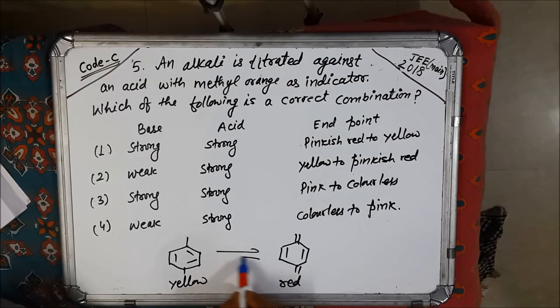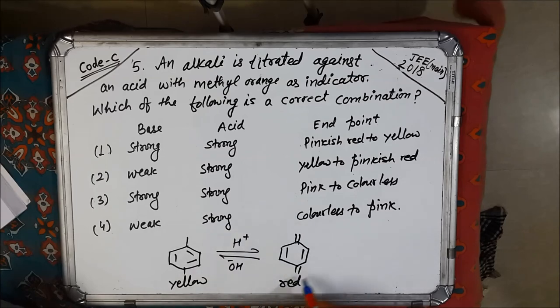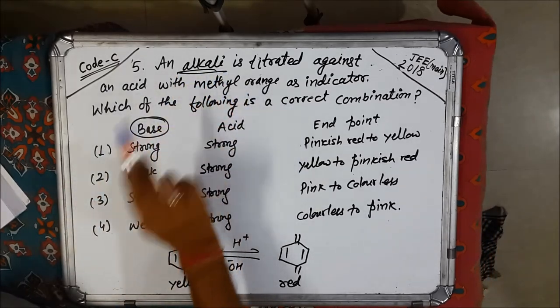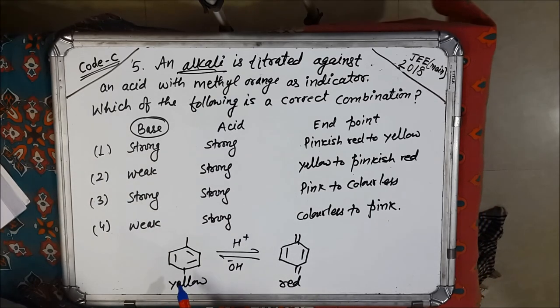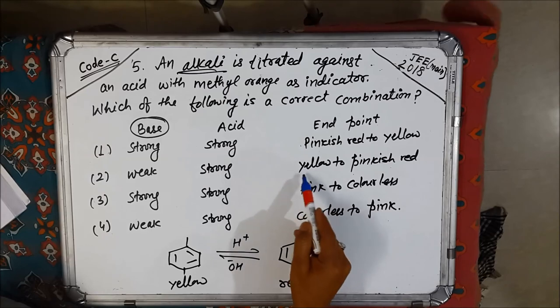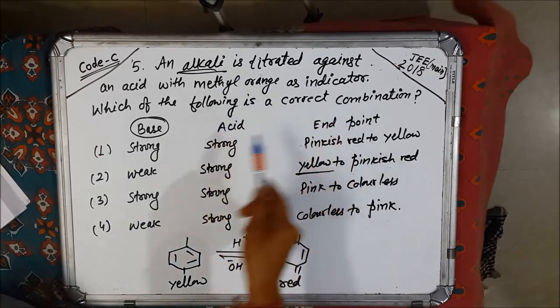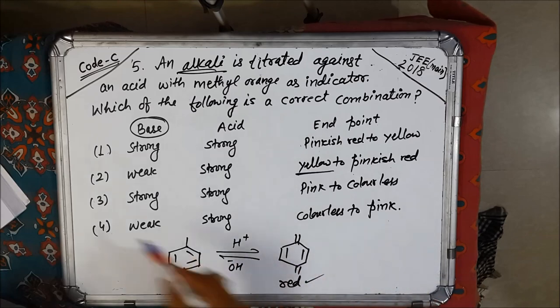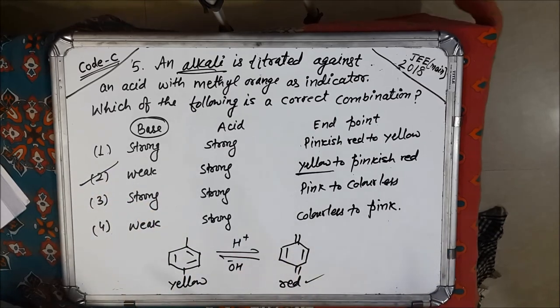The benzenoid form is yellow and the quinonoid form is red. Yellow form is in basic medium and quinonoid form is in acidic medium. If we compare these, you know in base, alkali, methyl orange is added in alkali, so in alkali it is yellow in color. There is only one option where yellow is written. And when it is titrated against acid it turns into quinonoid form and that is red or we can say pinkish red. So only one option is there. This is a very easy question.